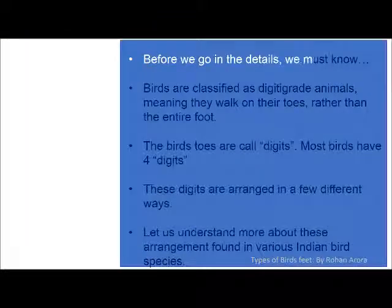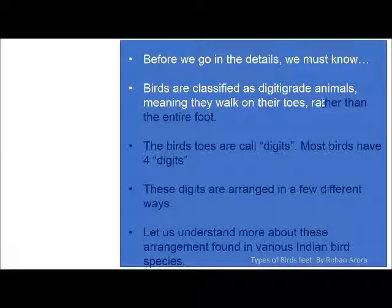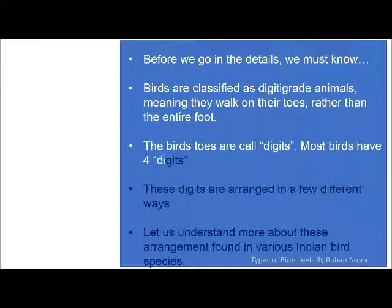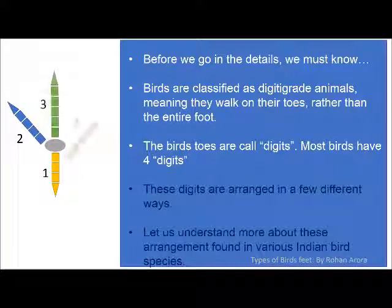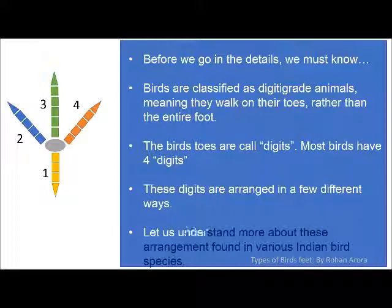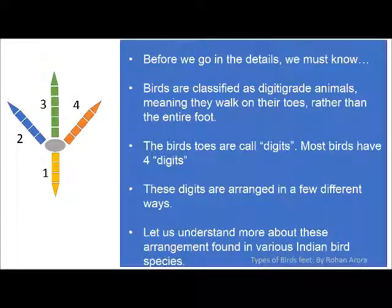Before we go into the details, we must know: birds are classified as digitigrade animals, meaning they walk on their toes rather than their entire foot. The bird's toes are called digits; most birds have four digits. This animation shows the basic structure of the bird's foot, which has normally four digits or toes, arranged in a few different ways. Let us understand more about these arrangements found in various Indian bird species.